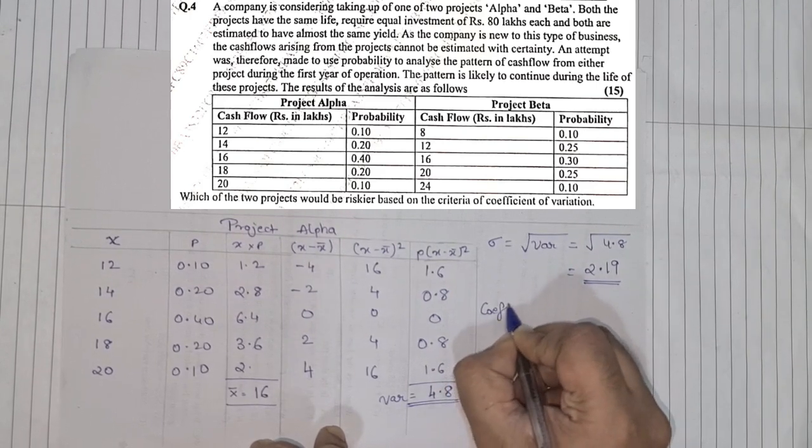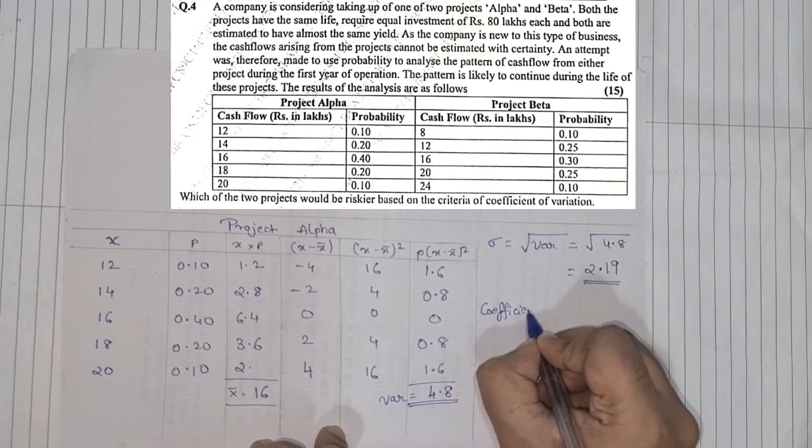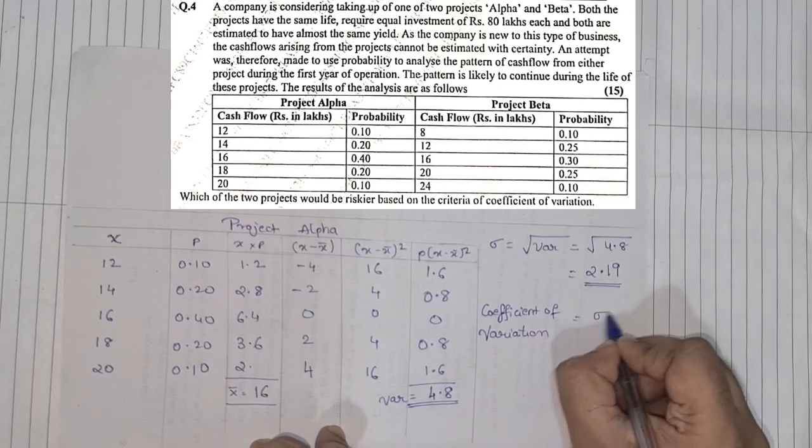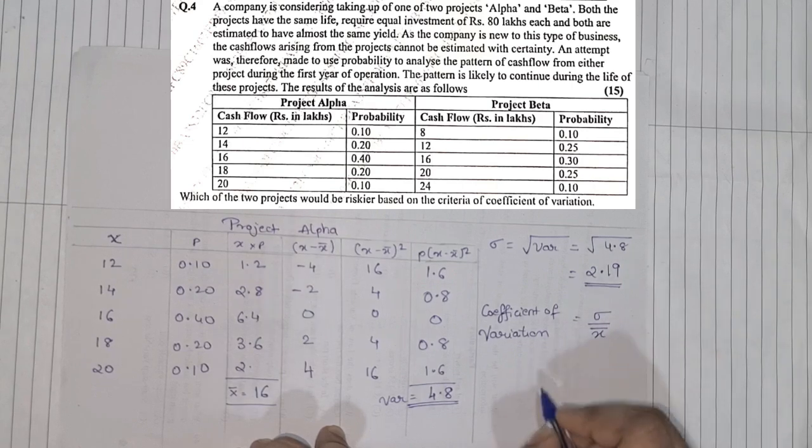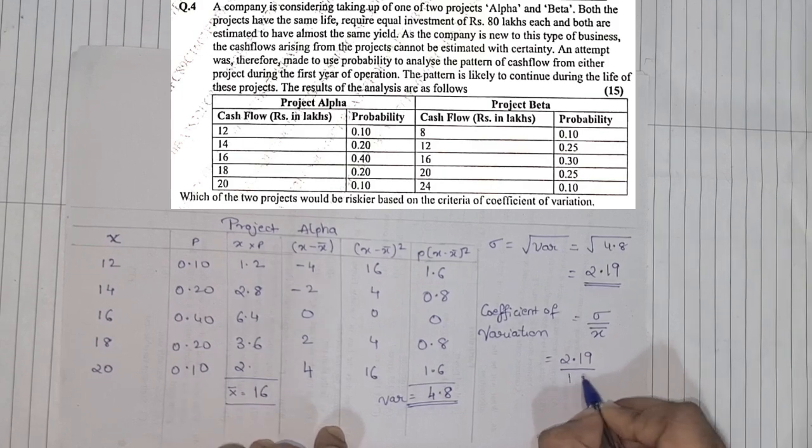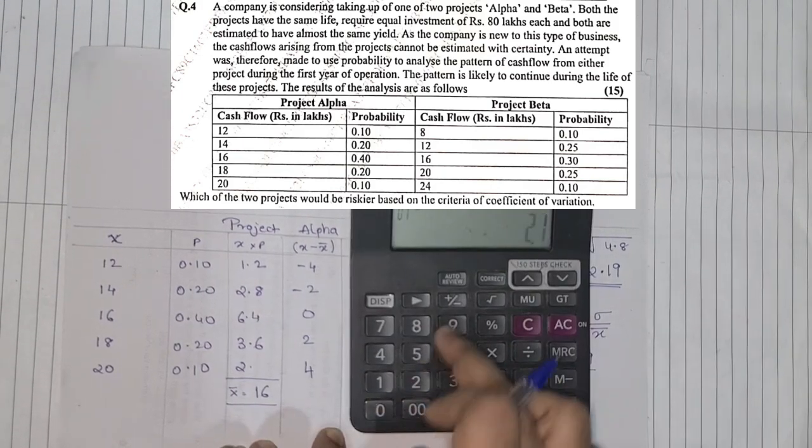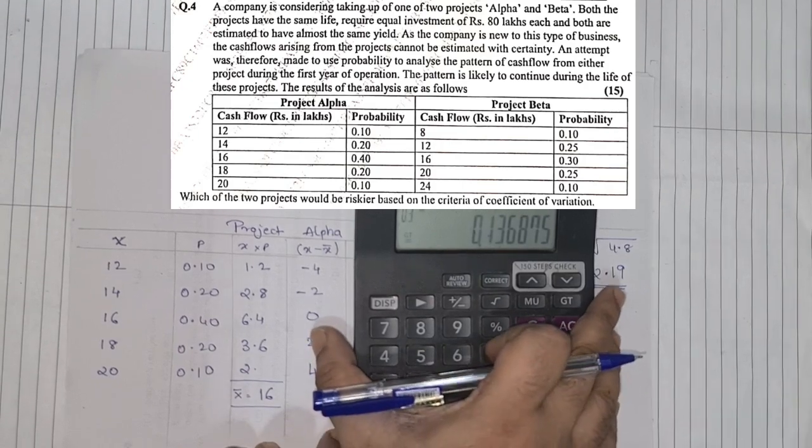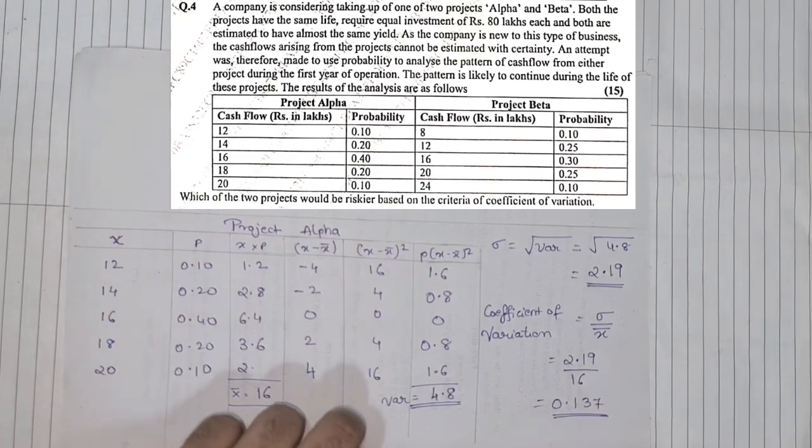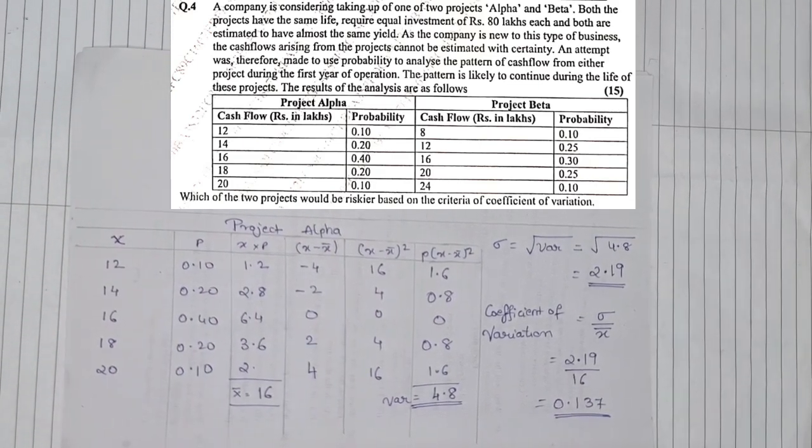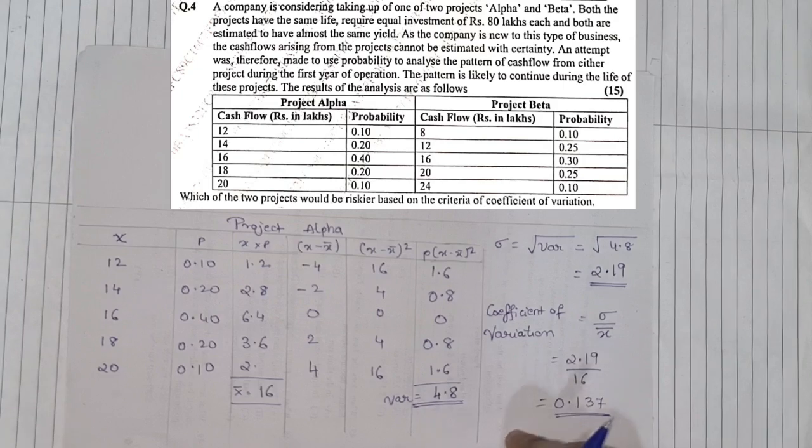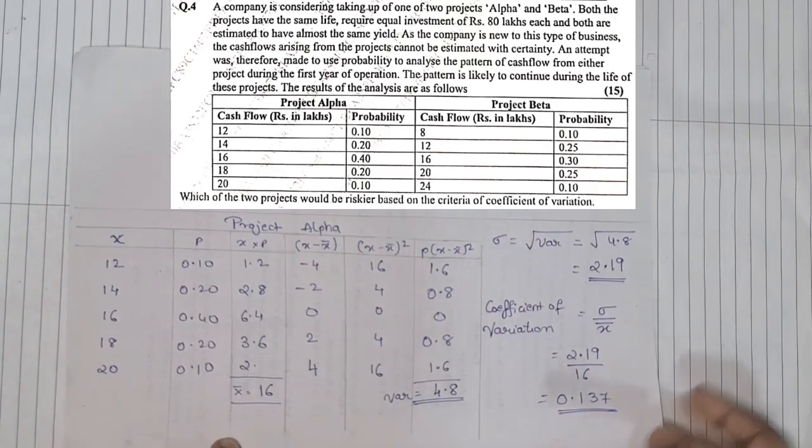Once we got the standard deviation, we can find coefficient. So coefficient of variation, the formula is standard deviation upon X bar. So standard deviation was 2.19 and the X bar that we got was 16. So 2.19 divided by 16, we got the value of 0.1368, so I'm writing here 0.137. This is the coefficient of variation of project Alpha. Now same way we'll do for Beta and then we'll try to compare it. I hope everyone have understood this part.